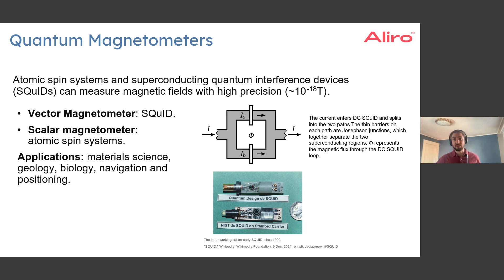By measuring the current through this device, you're able to detect a very precise change in your magnetic field. Other quantum systems, such as spin systems, are also being applied in terms of measuring magnetic fields.